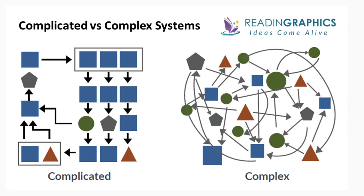A complex problem, however, differs a lot from a complicated problem. If you try to solve a complex problem using tools designed for complicated problems, you will surely mess up. Usually there is no main problem — you have a swarm of players and issues that are interrelated and collaborative, but do not display a hierarchy relative to each other. Usually players even have opposing interests. There are no simple solutions to complex problems.